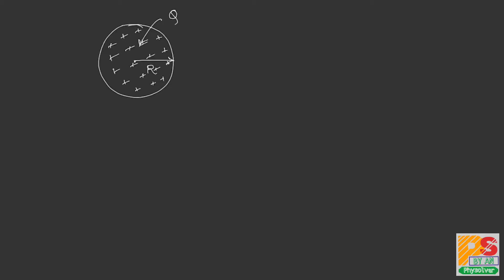To solve this question we need to understand how to find the electric field due to a uniformly charged solid sphere. Suppose this sphere has a total charge +Q uniformly distributed, with radius R. For a point situated outside the sphere at distance x from the center, the electric field intensity is E = kQ/x².